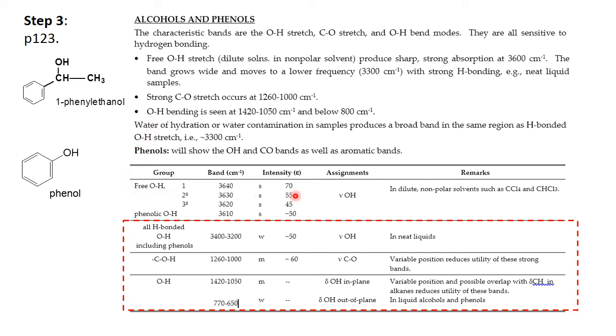We have the hydroxyl group stretches in dilute non-polar solvents where hydrogen bonding is not operative occur at around 3600 plus wave numbers. But when you use neat liquids or pure solids then we see the typical 3300 wide absorption band. Instead of being sharp it's quite wide as we saw. We also have the CO stretch 1260 to 1000 wave numbers with the proviso that the position is variable and it reduces the utility of these strong bands. Although they are wide or at least medium wide so we can pick them out.